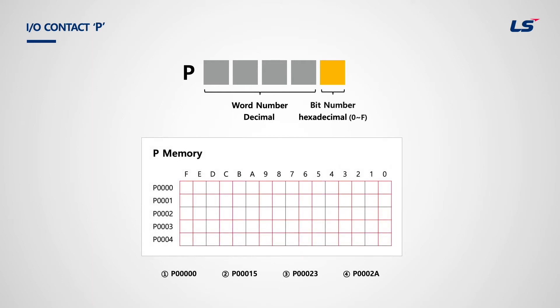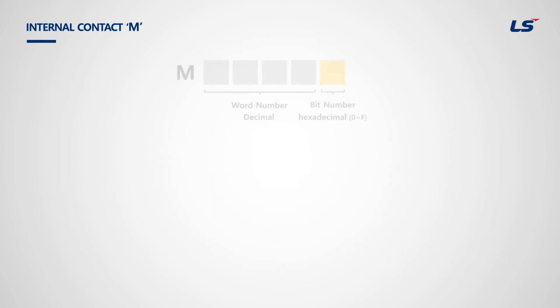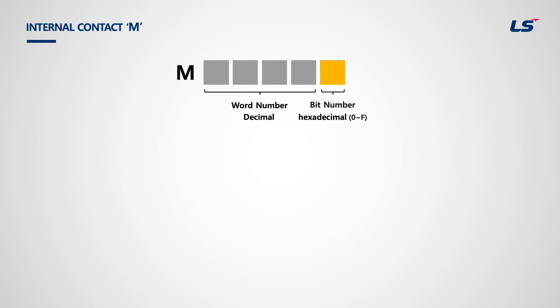Let's take a look at examples. P0000 is the first bit of P0 word. P15 is bit number 5 of P1 word. P23 is bit 3 of P2 word. P2A is bit 10 (hexadecimal A) of word P2.